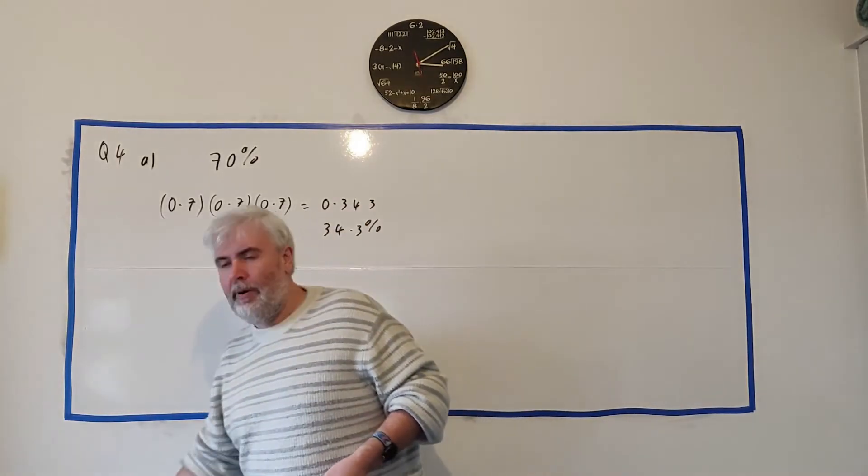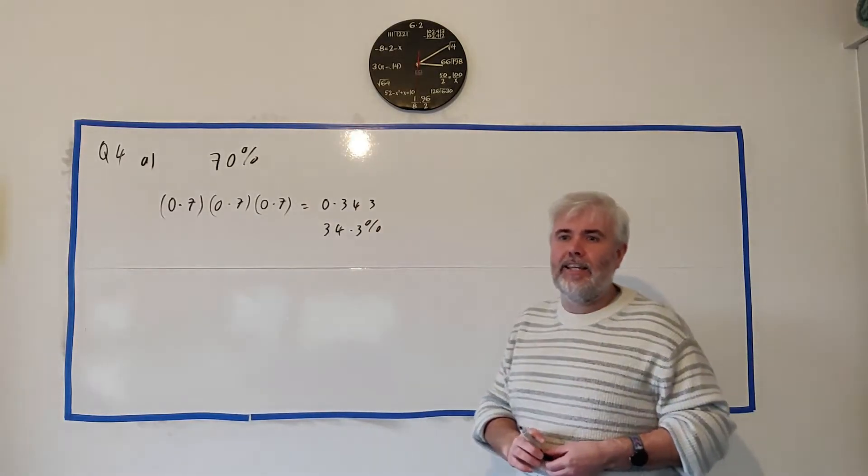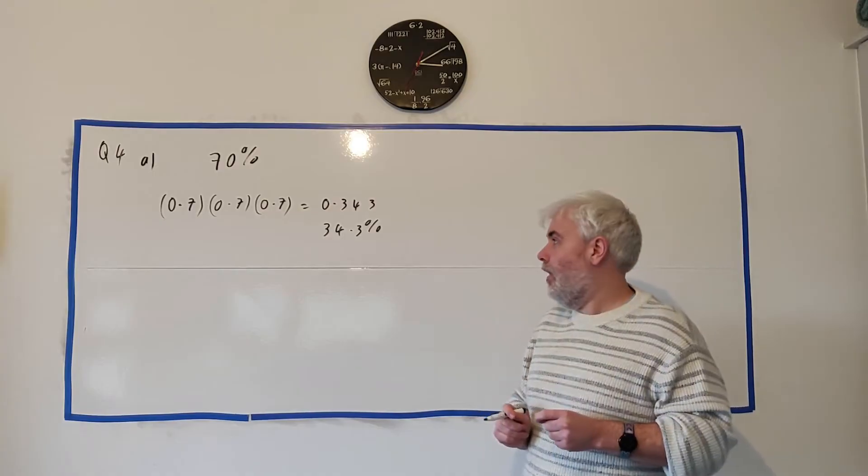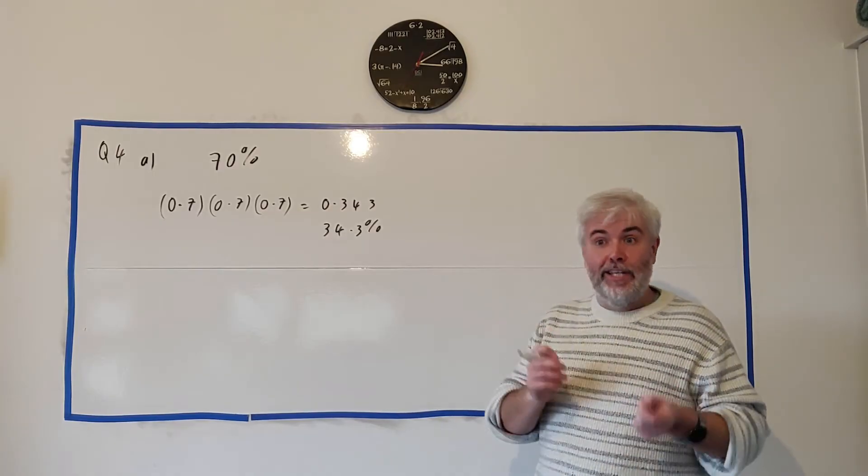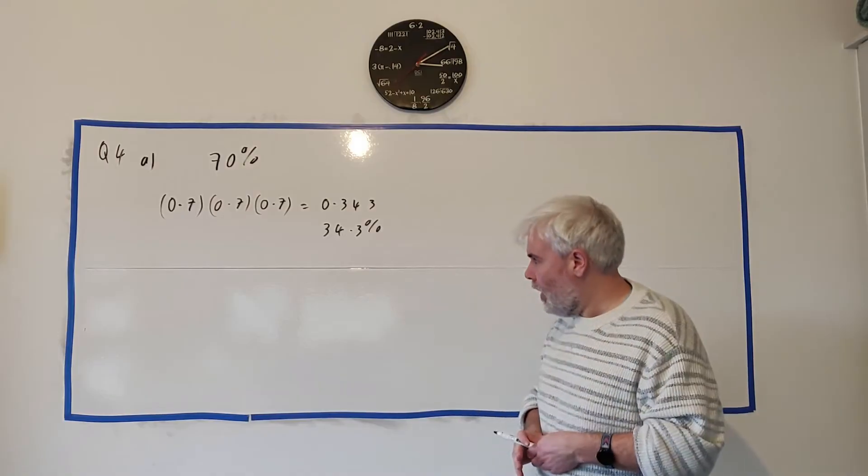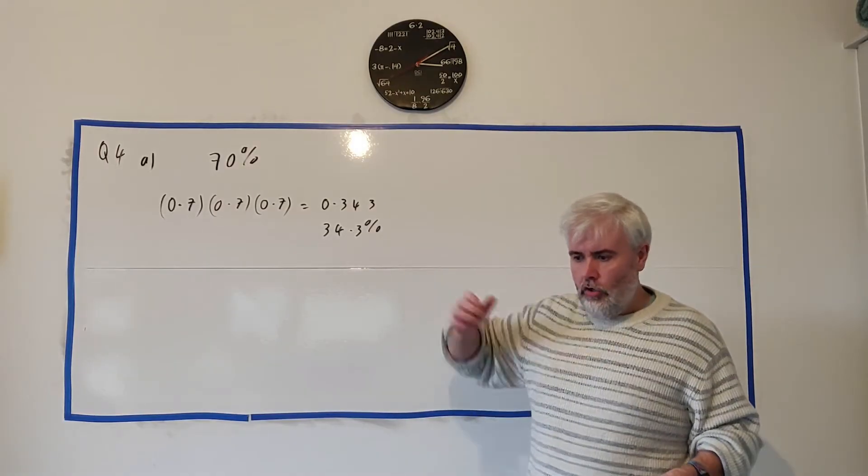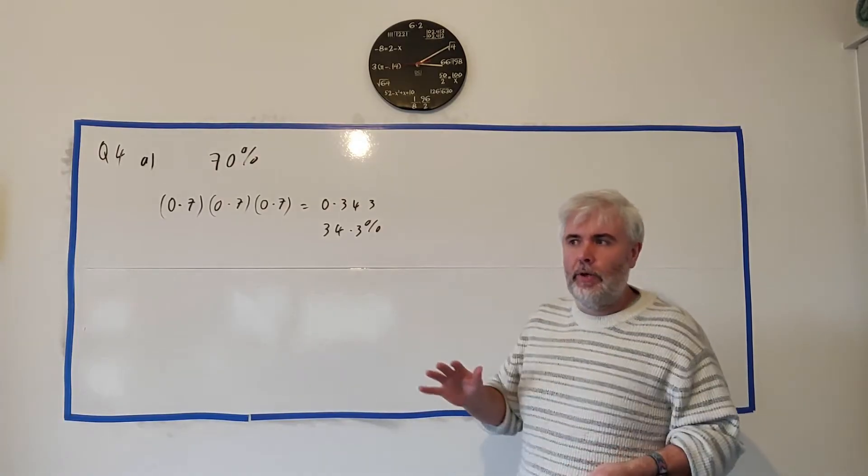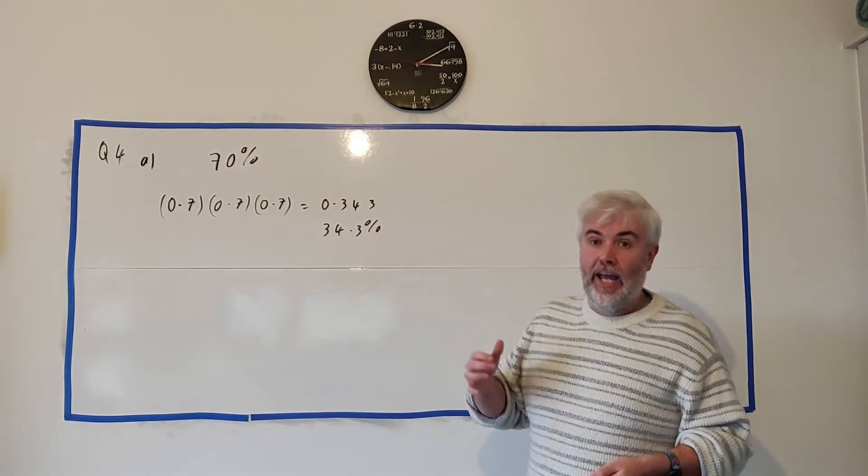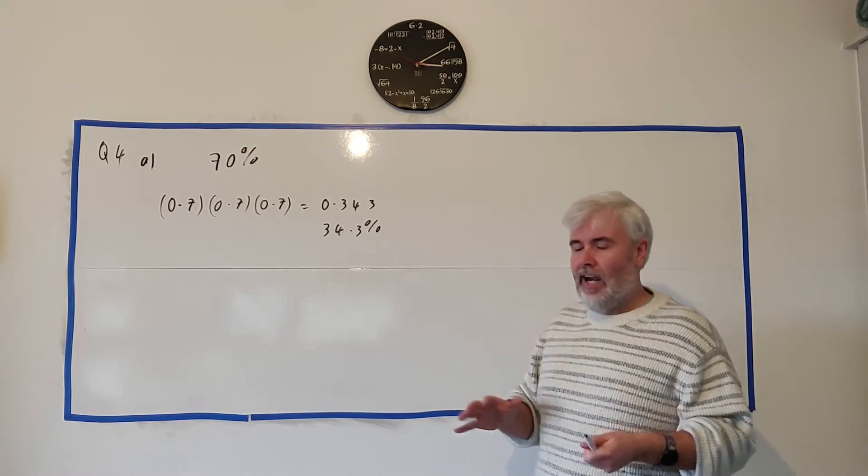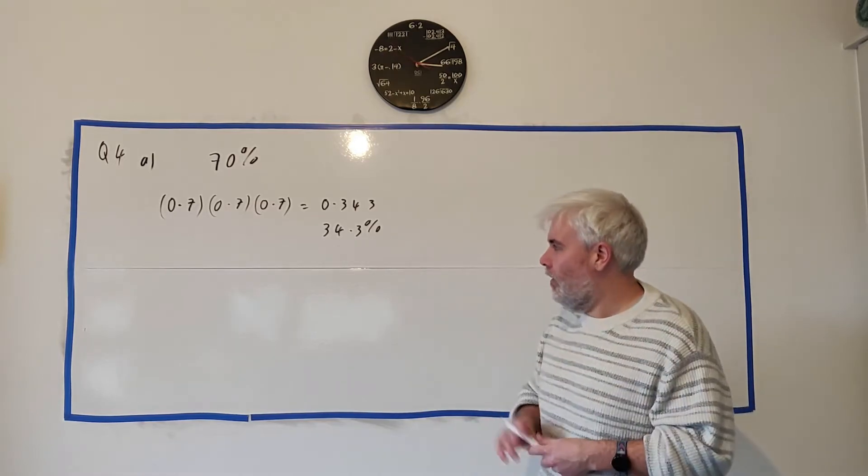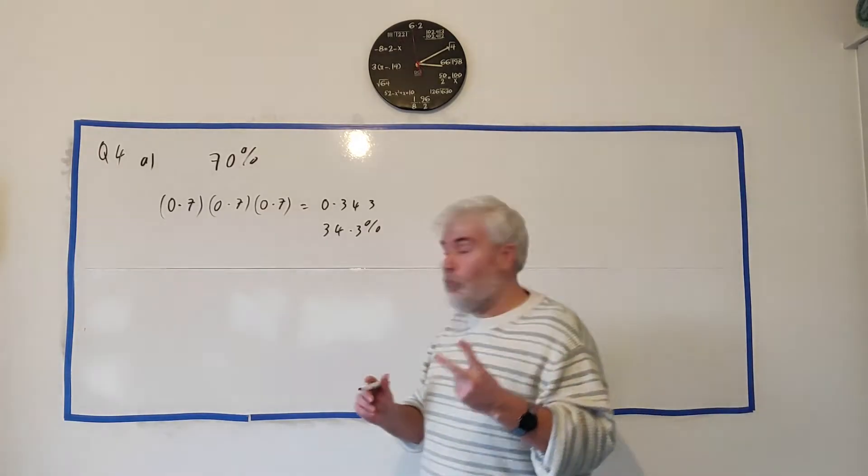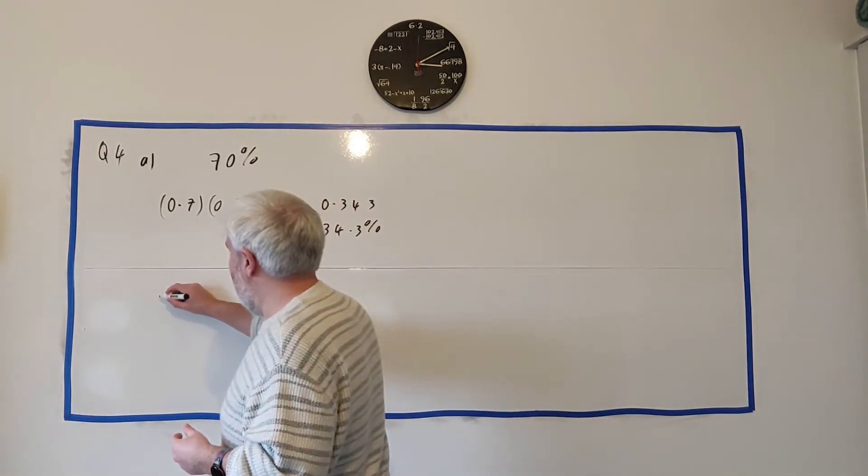Okay on to part two. Part two is a little harder. They say find the probability that he scores exactly two of them. So that means that he misses one of them but it doesn't say which one. So I'm going to show you how most students should probably do this and then at the end I'll show you how you can do it for a harder question. So how can he make two and miss one?